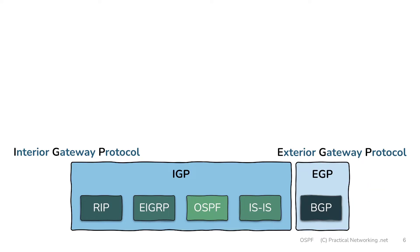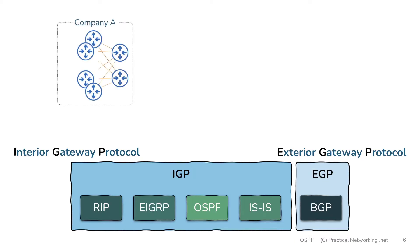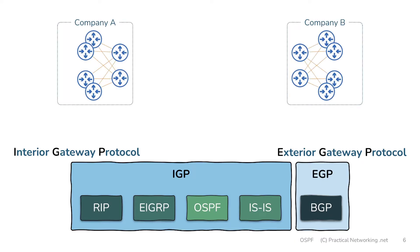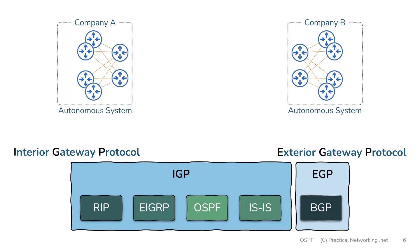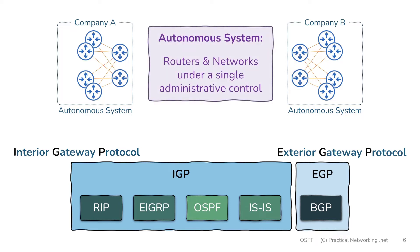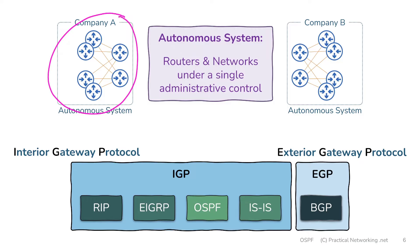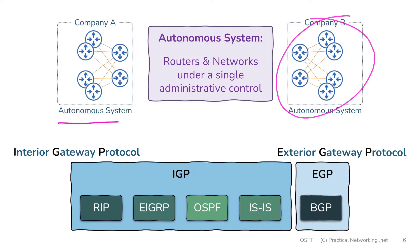To discuss these concepts we're going to use two company networks. Since these are two separate company networks, they can each be referred to as an autonomous system. An autonomous system is any set of routers or networks underneath a single administrative control. Since each company network is different, each is referred to as its own autonomous system.